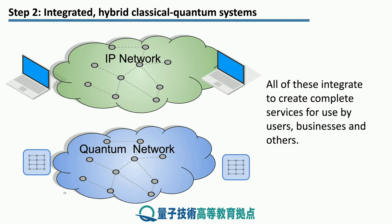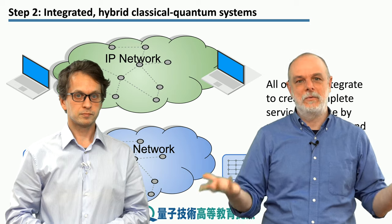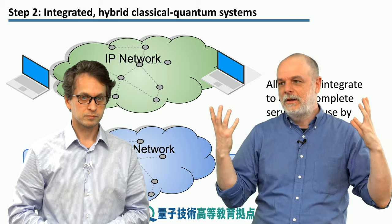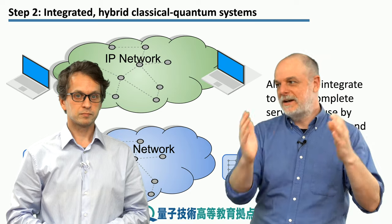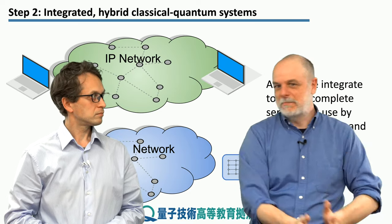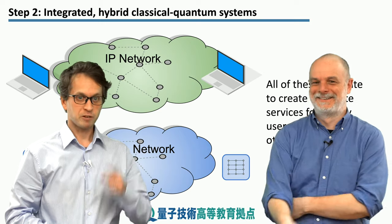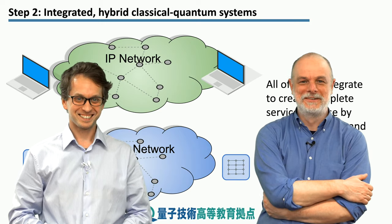So all of this will fit together. There's going to be a quantum network and an IP network — the existing classical internet — and these two things are going to have to come together to build complete, integrated, hybrid, quantum-classical distributed systems. Synchronized — that's an important point too.